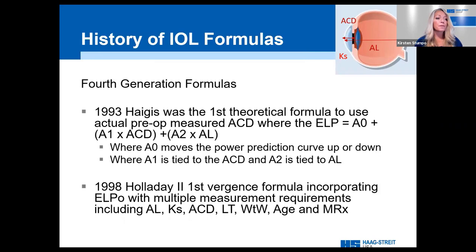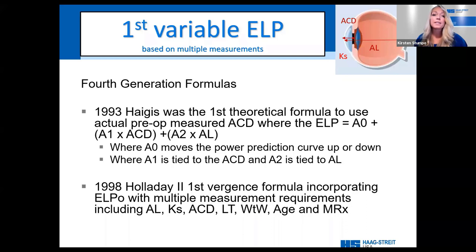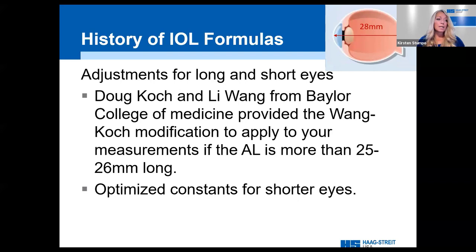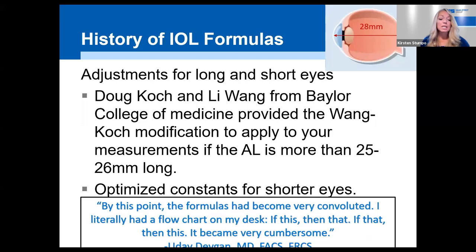In the 90s, the fourth generation formulas came along. Dr. Haigis was the first to introduce the idea of using a preoperative anterior chamber depth measurement, followed by Jack Holliday, who created the Holliday 2 formula based on a seven-variable formula. These were the first formulas to offer a variable effective lens position based on multiple preoperative measurements. However, formulas continued to miss the mark for extreme axial lengths, so doctors Doug Koch and Li Wang from Baylor College of Medicine came out with the Wang-Koch modification — an axial length adjustment with a slightly different version for each of the standard formulas. By now, calculations had become quite cumbersome.